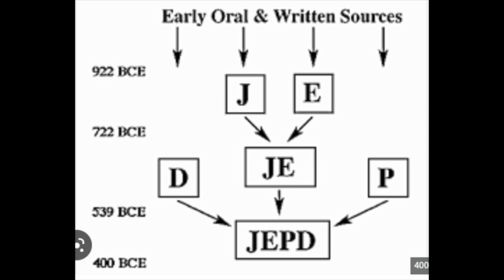The first five books of the Bible are attributed to Moses out of church tradition, but in scholarship, they use something known as the documentary hypothesis. The documentary hypothesis has the J source, the E source, the D source, and the P source. The J source is the Yahweh source, the E source is the Elohim source, the P source is the Priestly source, and the D source is the Deuteronomy source.